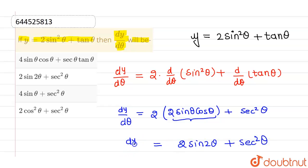So this is our final answer which is given in option 2, 2sin2θ plus sec²θ. So option 2 is correct and rest all options are incorrect.